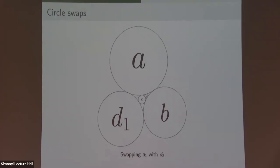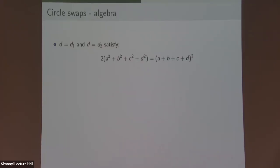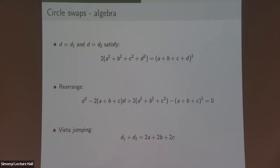One thing we want to do is figure out what are all the curvatures in a packing. The basic idea: let's say you start with curvatures A, B, C, and you also know d1. You start with four mutually tangent circles and know all their curvatures. You can swap d1 for the other circle that's tangent to those first three, d2. Can you figure out d2 from knowing the first four numbers? Yes — it's just a bit of algebra. If you look at the Descartes equation, d1 and d2 are both solutions. Using Vieta's formulas, the sum of d1 and d2 equals 2(A + B + C), so d2 = 2(A + B + C) − d1: a very simple linear function.